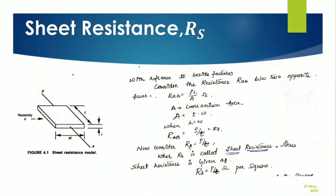Now I will define what is resistance for this material. Taking resistivity into consideration, the resistance from point A to point B is defined using the cross-sectional area A. The cross-sectional area here is W into thickness, so A is equal to thickness into width.